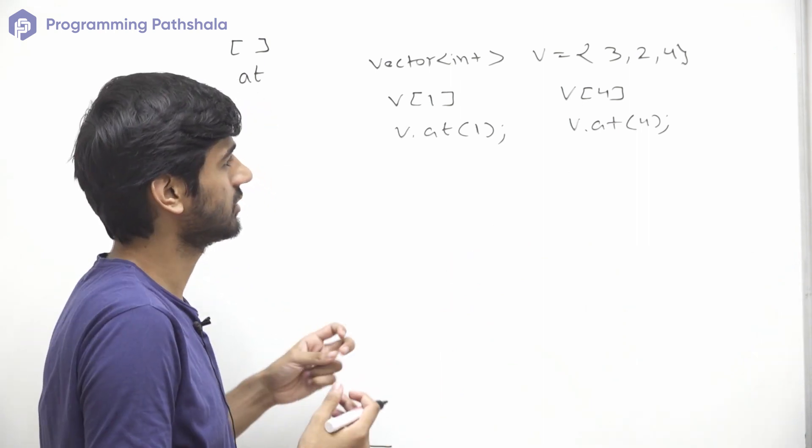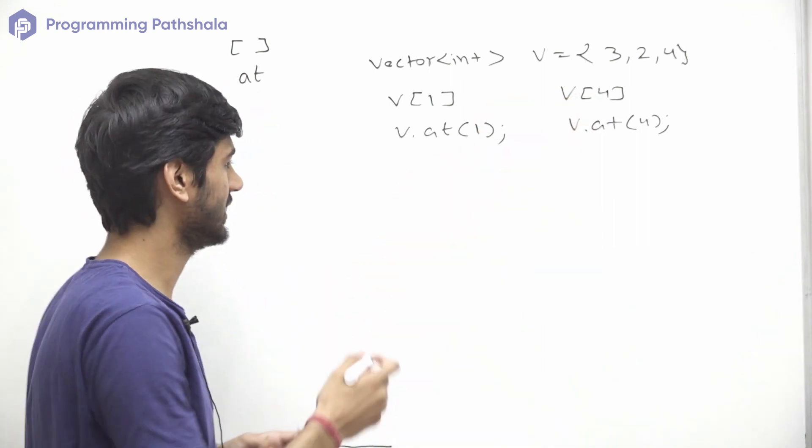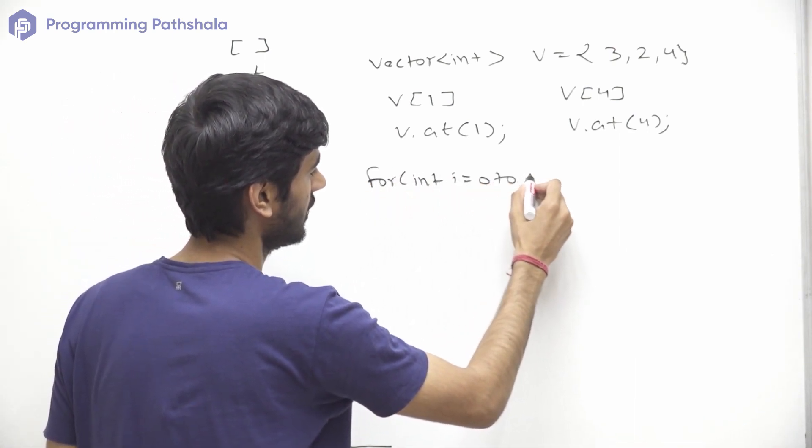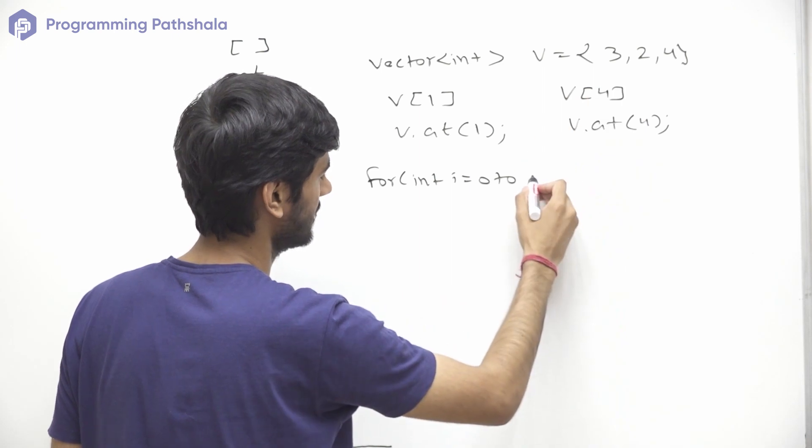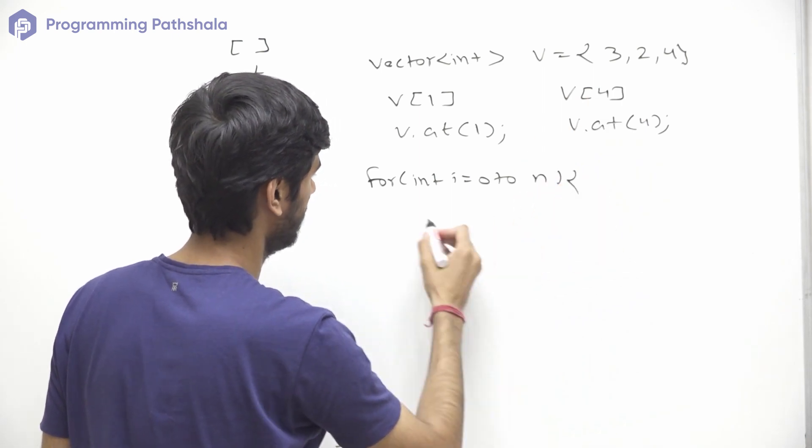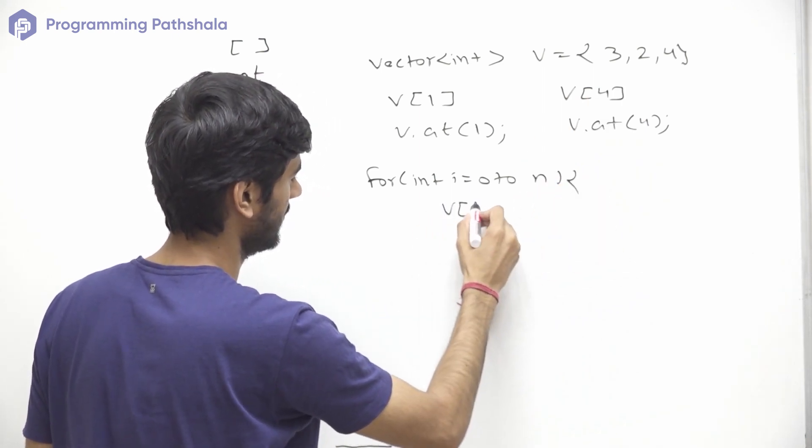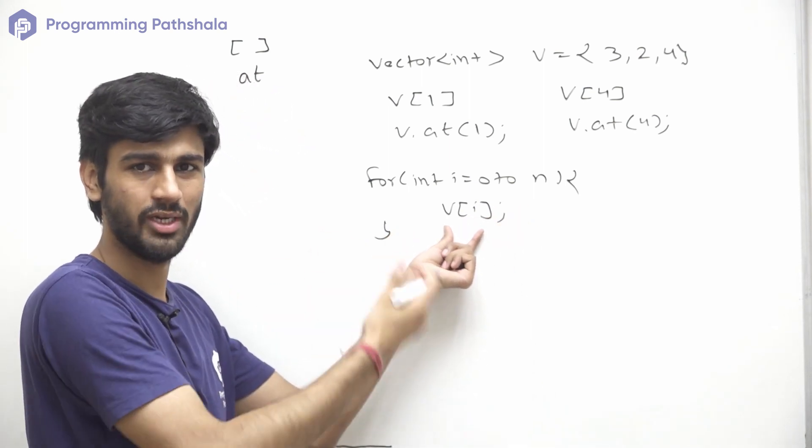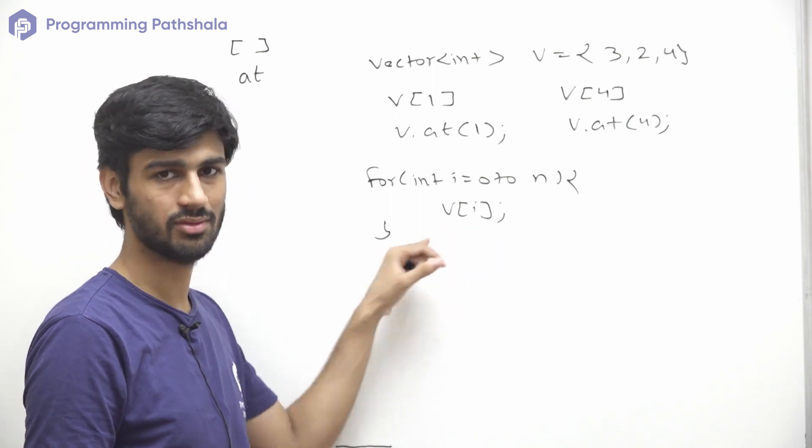Now let's say if you just want to iterate over all the elements, then we can do that using a for loop starting from 0 and going till whatever is the size n. And we can just access the ith element. So now if you just want to update or print or do anything, then we can do that using this v of i.